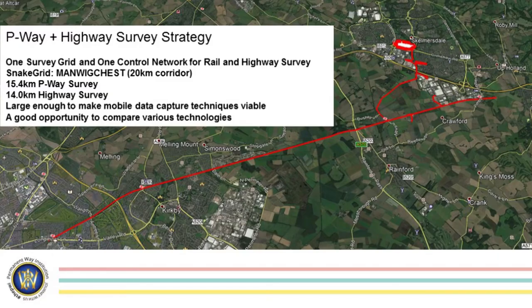Taking on from the aerial LIDAR, we completed the ground level surveys. The first thing to mention is it's one survey grid — Manwig Chest 18 covered the whole area, highway and rail — one GPS network from the start. It just helps with consistency, helps with the tie-ins, makes sure there's no discontinuity between two surveys. About 15 kilometres of P-way and 14 kilometres of highway, which made it large enough to start using mobile capture technologies, and a good opportunity to compare different mobile capture technologies. It's a good case study and a good database.